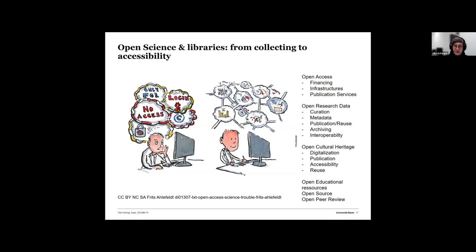We are also concerned with open cultural heritage. In Basel, we have a quite famous collection of historical material going back to the 15th century, and we have digitalized less than 10% of what we store. So we need to put real effort into digitalization, making material available for data- and digital-driven research, and making it accessible through infrastructures. We are less involved in open educational resources, open source, and open peer review — both here in Basel and more broadly, though these remain topics for libraries.